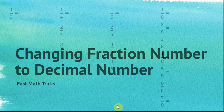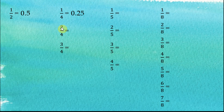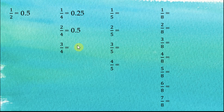Now let's start with some easier ones. 1 over 2 is half, and therefore it is equal to 0.5. 1 over 4 is a quarter, equal to 0.25. 2 over 4 is equal to 1 over 2, and therefore it is equal to 0.5. 3 over 4 is 3 quarters, 3 times 0.25, and therefore it is equal to 0.75.